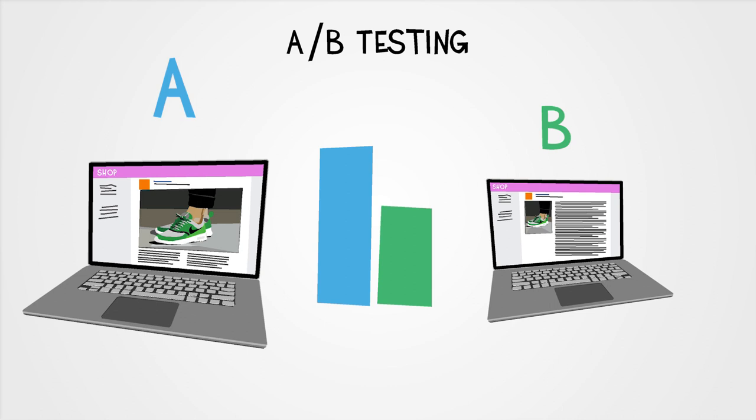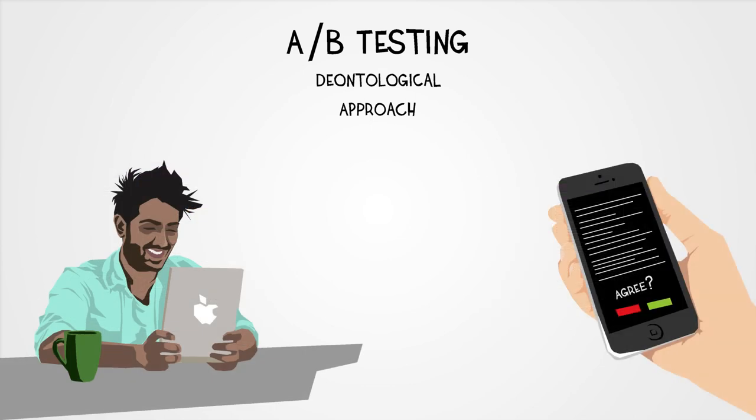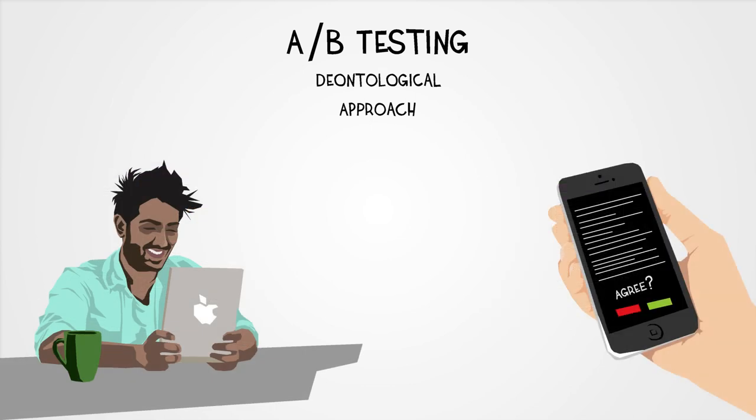So, if one accepts the deontological premise that a rule must be universal, A-B testing is unethical, unless every visitor to the site gives their explicit consent. However, this would clearly be impractical. Imagine having to read and sign a consent form every time you visited any major website.